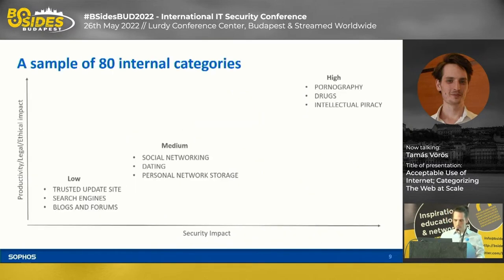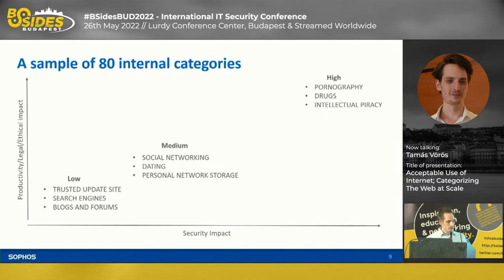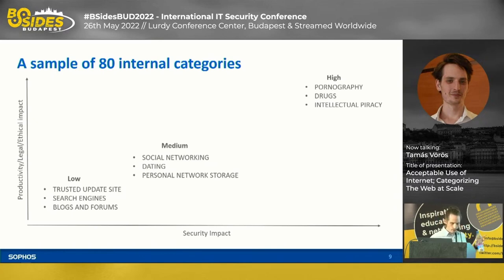So what do we mean by labels? Internally within Sophos we track 80 labels. I show nine examples of those 80 labels here. These labels — or URLs belonging to these classes — could have impact on the organization along multiple dimensions. One important dimension is security. There are trusted update sites like Microsoft.com, search engines like Google, or Stack Overflow, which you are less likely to get infected from.